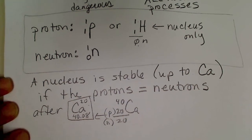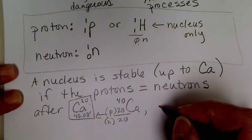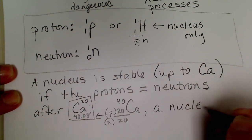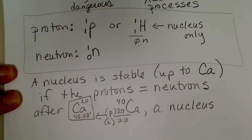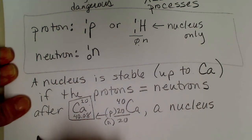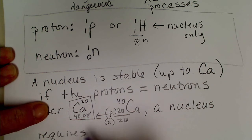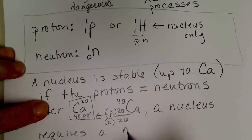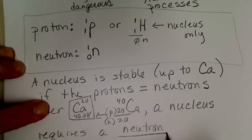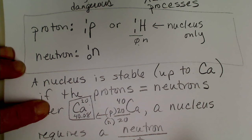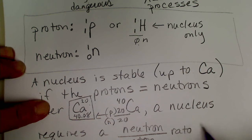Remember that's the protons - this number, when we subtract from the mass number, is the neutrons. But after calcium, a nucleus requires more than... requires more neutrons. So the nucleus requires a neutron to proton ratio that's greater than one.